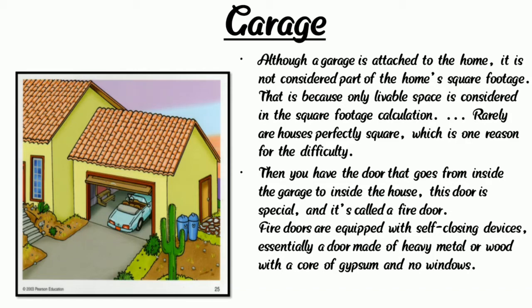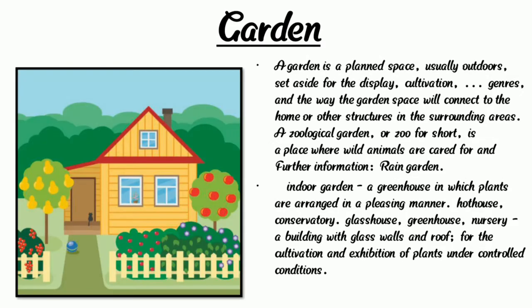Now we are going to learn our next place — it is a garden. Here we can see a photograph of a garden, with so many trees and flowers. Garden is a very beautiful place in our home. A garden is a planted space, usually outdoor, set aside for the display and cultivation of plants. The garden space will connect to the home and surrounding areas.